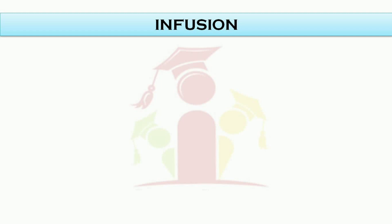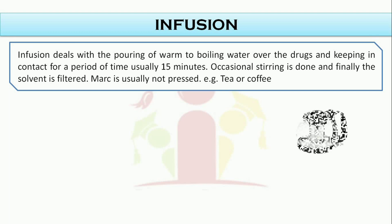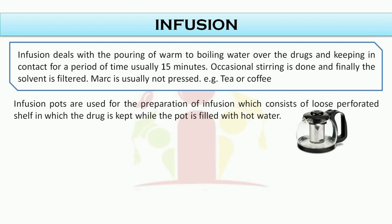The first process of extraction is infusion. Infusion deals with the pouring of warm to boiling water over the drugs and keeping in contact for a period of time, usually 15 minutes. Occasional stirring is done and finally the liquid is filtered. Marc is usually not pressed. For example, tea or coffee is made by the process of infusion. Infusion pots are used for preparation of infusion, which consists of a loose perforated shell in which the drug is kept while the pot is filled with hot water.